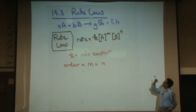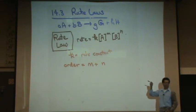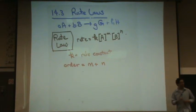Later you're going to see that m sometimes will equal lowercase a, and n sometimes will equal lowercase b. But that's not always going to be true. So m and n are not necessarily equal to the coefficients.